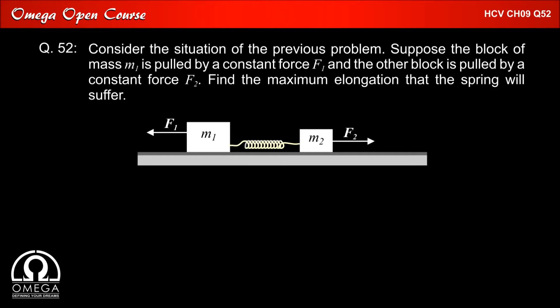Therefore both the blocks M1 and M2 will experience pseudo force towards left side as center of mass is accelerating towards right. The magnitude of pseudo force on M1 will be equal to M1 into A0 and that on M2 will be equal to M2 into A0.